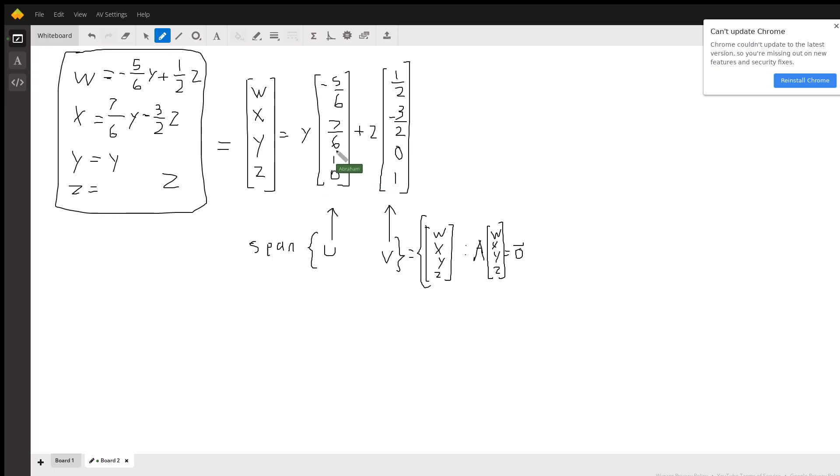It's any linear combination of these two columns, because it's these two linear combinations added together and scaled by any number, because y and z can be any number. So right here we've arrived at the solution set is the span of these two vectors.